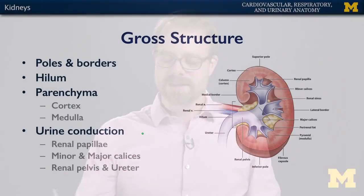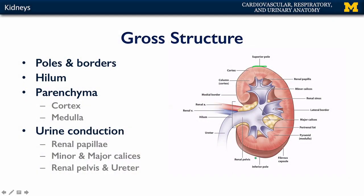Let's talk about the kidneys. The kidneys, as described by many anatomical textbooks, are kidney bean-shaped structures, as tautological as that may sound. They have both superior and inferior poles. The superior pole is generally around vertebral level T11 and the inferior pole around L1. There are also convex lateral borders and a concave medial border, which hosts the hilum — the area for the neurovasculature to enter and exit the kidney.